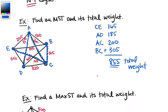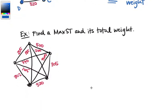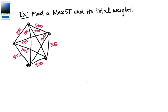Kruskal's algorithm is for finding MSTs, but we can also use it to find maximal spanning trees by reversing it — instead of picking the cheapest edge, you pick the most expensive edge. We'll do that with the same graph. So which is our most expensive edge? It looks like 500. Let's label our vertices. Edge AB has weight 500.